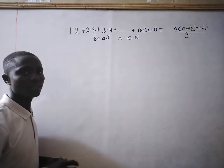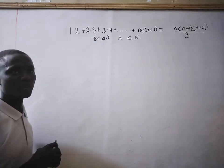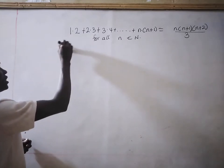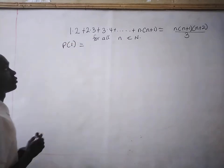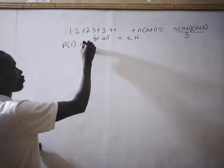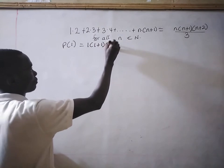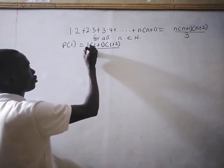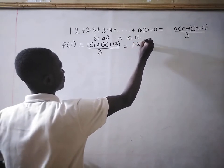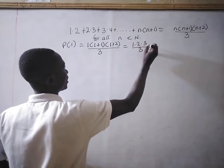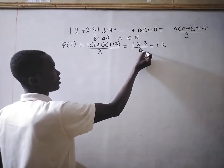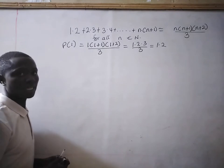Now, how do we prove using the principle of mathematical induction? We will first look at the base case, that is P(1). When n=1, you have 1×(1+1)×(1+2) all divided by 3, which equals 1×2×3 divided by 3, which equals 6 divided by 3, that is 1.